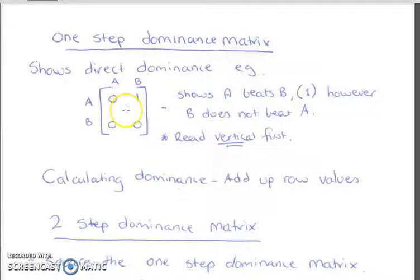We read the vertical first, so that means the side here. So what I mean by vertical is here. So you're going from this side and then to the top. So A beats B. So start from there to there. Calculating dominance, you can add up the rows. So you add up the rows across.